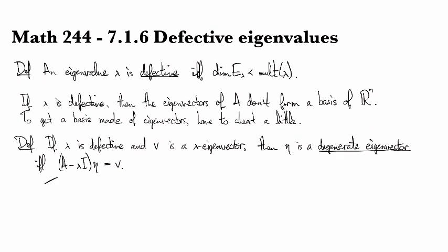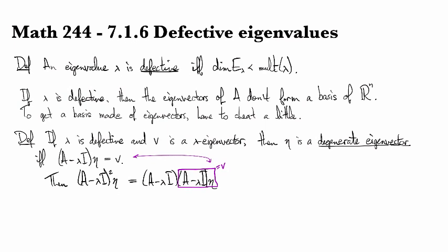And so the reason for this definition is that this means that if you do (A - lambda I) twice to eta, then you do get zero. Because if we write this out, it's (A - lambda I) times (A - lambda I) eta, and we're saying that eta solves the equation (A - lambda I) times it gives you v. That's this equation right here. So we can simplify it like that.